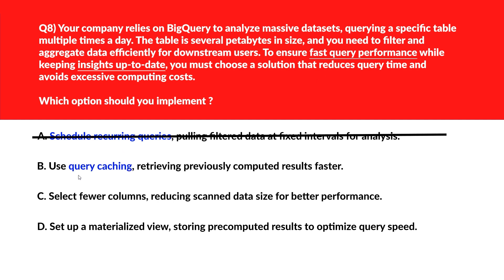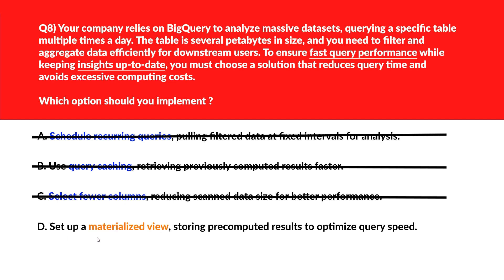Option B says use query caching. Query caching is effective for identical recent queries but frequent data updates invalidate the cache — incorrect. Option C says select fewer columns. Limiting columns offers marginal performance gains but doesn't solve the challenge of querying a vast table for timely aggregations — incorrect. Option D says set up a materialized view. Materialized views pre-compute and store query results, providing faster access to fresh aggregated data from large tables. This meets the requirement — let's lock it as the right choice.